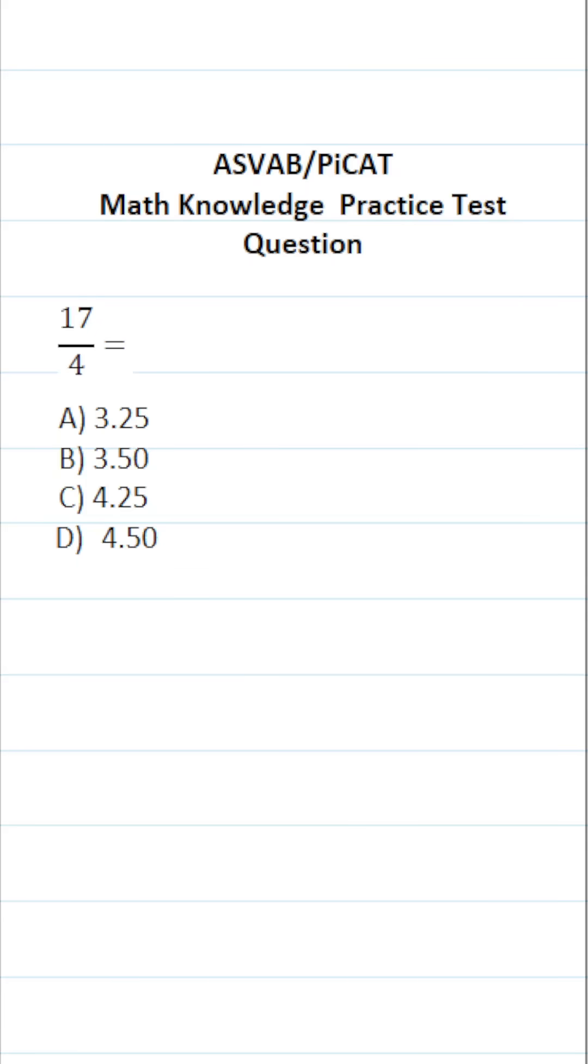This math knowledge practice test question for the ASVAB and PICAT says 17 over 4 equals. So again, we want to convert the improper fraction 17 over 4 to a decimal.